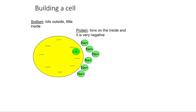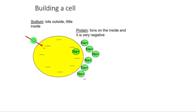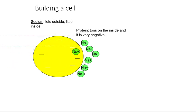Before we continue — if all I've got is protein on the inside of my cell and I take an electricalness measuring stick and stick it right here on the inside of the cell, what do I measure? Is the inside of the cell very negative or very positive? Your answer should be: the inside of the cell is very negative — because of these proteins. We call this a negative membrane potential.